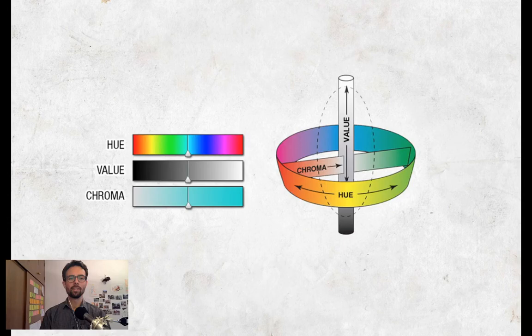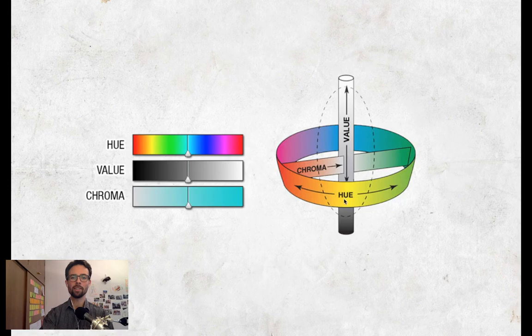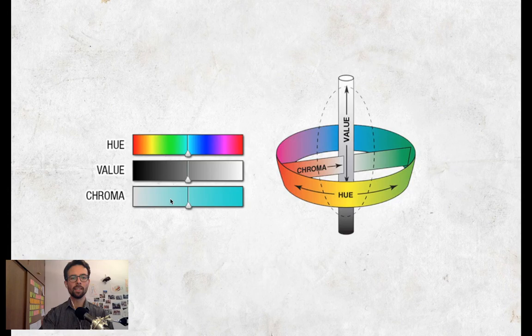Hue is what people usually refer to when they say 'color' — it's green, yellow, blue, all these different hues, and on the model the hue goes around the space. Value, the second dimension, is just the brightness from very bright to very dark — the amount of light or absence of light, and that goes up and down in the 3D model. The last one, chroma or saturation — some people also call it intensity — goes from the center out, so the more outward you go the more saturated the color becomes.